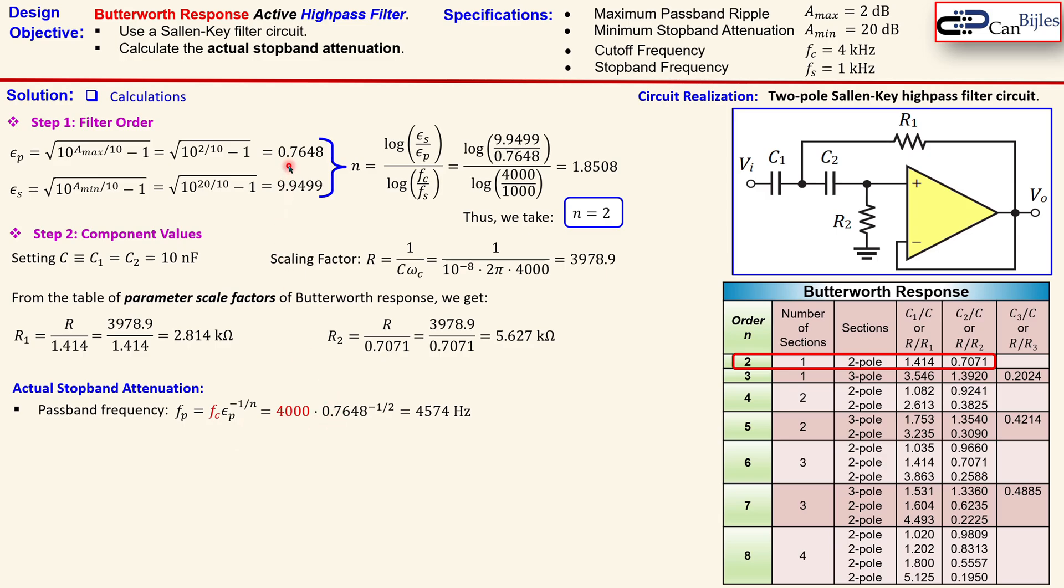In this case we have only the minus sign, that's the only change. Now we know the cutoff frequency 4000 or 4 kilohertz. We know the epsilon_p from our step 1. This frequency, as said before, we will have an attenuation of 2dB or our gain will be there at minus A_max or minus 2dB. We will see that shortly in the simulations.